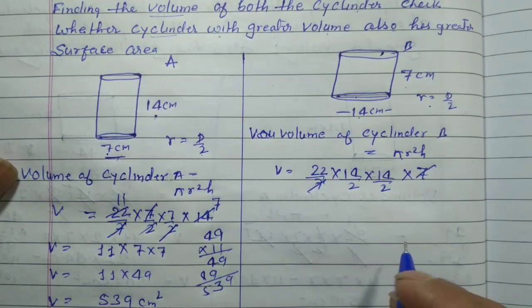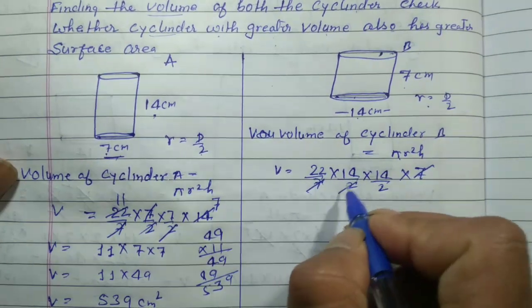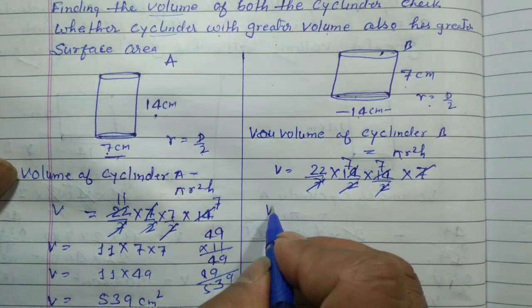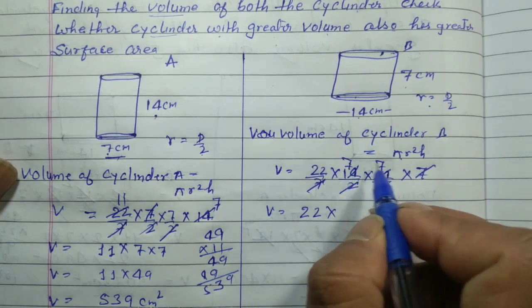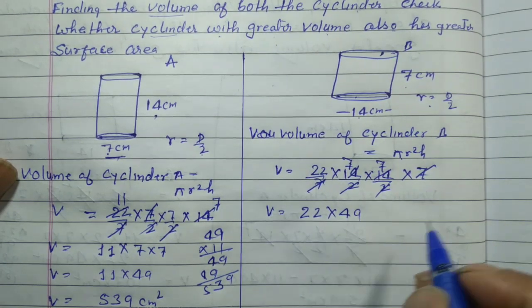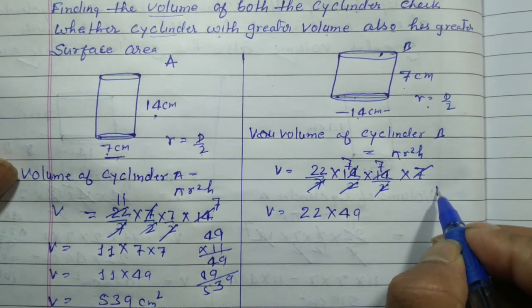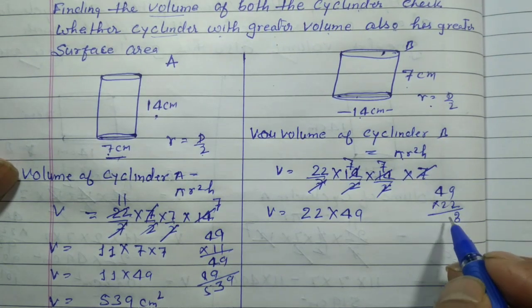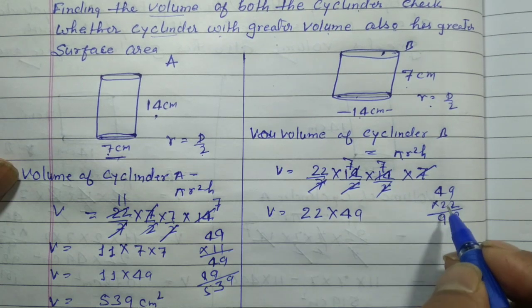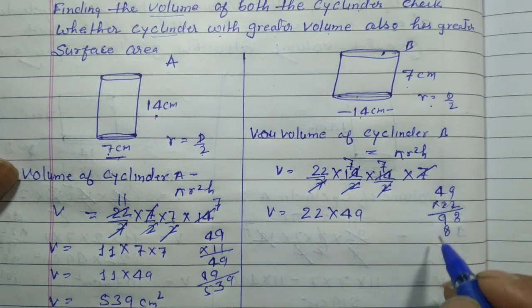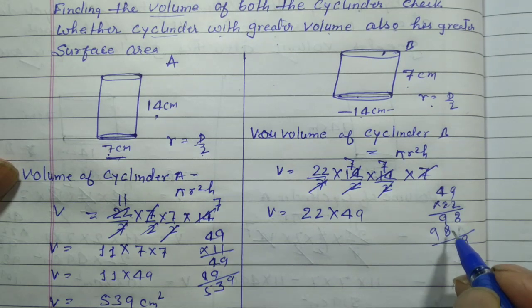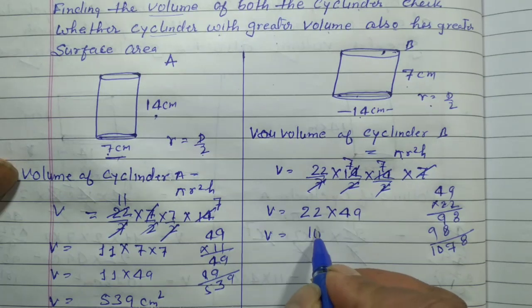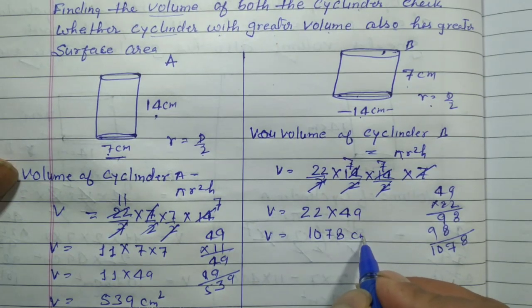So R = 7, and R × R = 49. Height = 7. Volume = 22/7 × 49 × 7 = 22 × 49 = 1078 cm³.